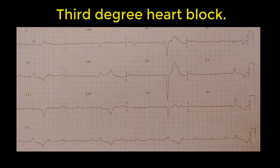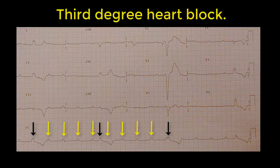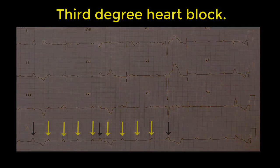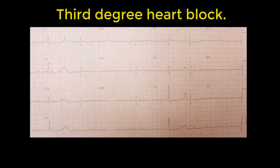In third degree heart block, the essential thing is that the atria — represented on the ECG by the P wave — and the ventricles — represented by the QRS complex — are contracting separately. They are dissociated. There is no conduction through the AV node. The big problem is that the ventricles are now relying on their intrinsic escape rhythm, which can occur anywhere from the AV node all the way down through the bundle branch, Purkinje system, or even the ventricular muscle.